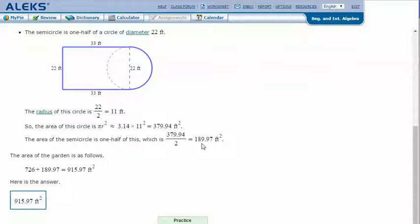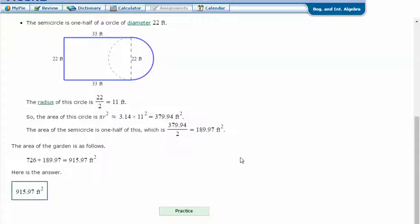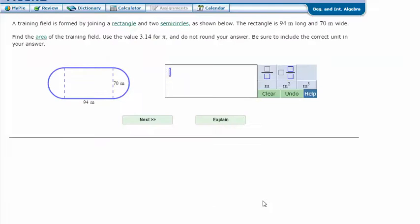The area of the garden is the area of the rectangle plus the area of the semicircle, which equals 915.97 feet squared. Let's try another one.